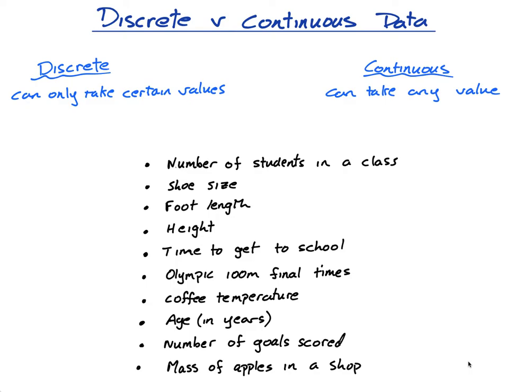Hi everybody. In this lesson we're going to look at the difference between discrete and continuous data. I have two loose definitions: discrete data can only take certain values, and continuous can take any value. The best way to explain the difference is to look at a lot of examples, decide which category each one goes into — discrete or continuous — and discuss them. I'm going to move them into the correct category.